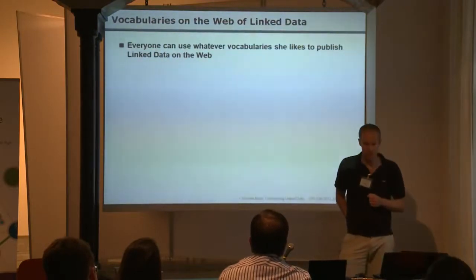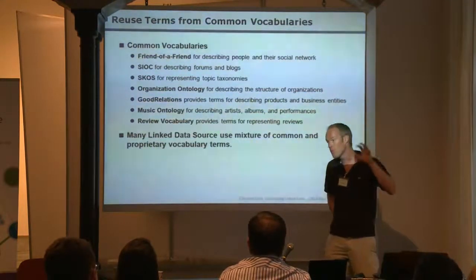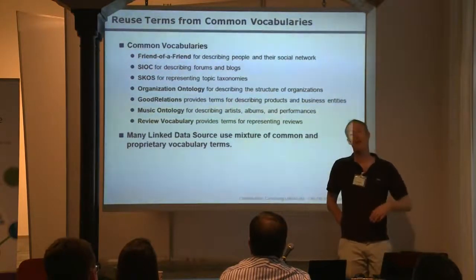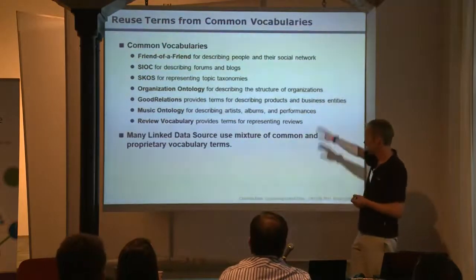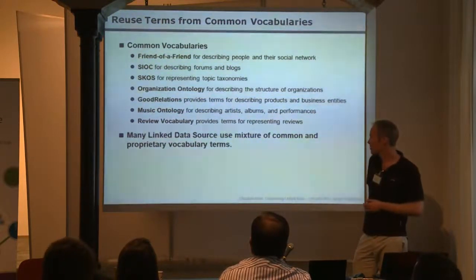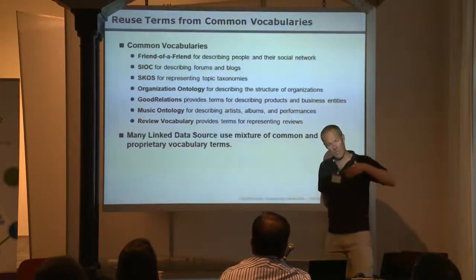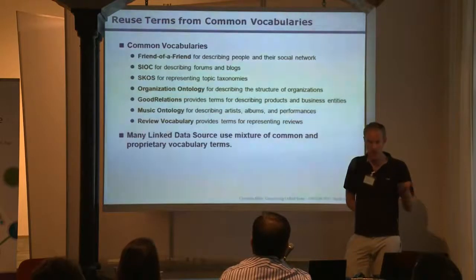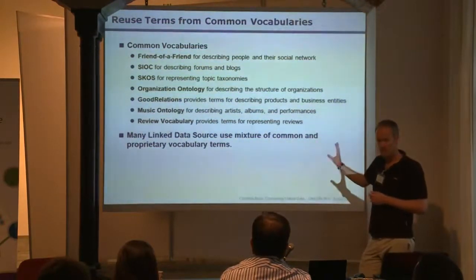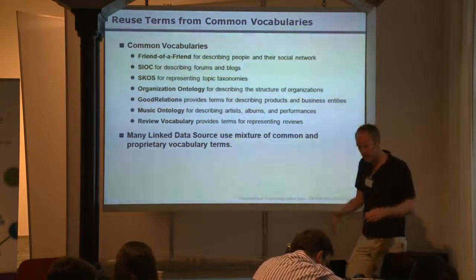The same applies to vocabularies. In theory you can use any vocabulary to publish data on the web of data, but if you want to be a nice data publisher, you go through the effort to find out what the common vocabularies in your domain are and publish data using them. There's a bunch of widely used vocabularies: FOAF, SKOS, Good Relations, Music Ontology, Review Ontology. Many data sources use these for parts of their data, and for more specific parts they still use proprietary vocabularies. The more effort the publisher puts into reusing common vocabularies, the easier it becomes for the data consumer to integrate data from many sources.